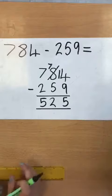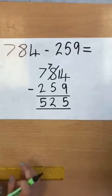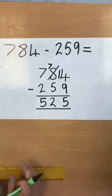7 tens subtract 5 tens, which is 2 tens, and 7 hundreds subtract 2 hundreds, which is 5 hundreds.